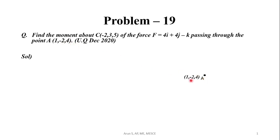Given point A with coordinates (1, -2, 4) and force vector F = 4i + 4j - k, we have to find the moment of this force about point C with coordinates (-2, 3, 5).